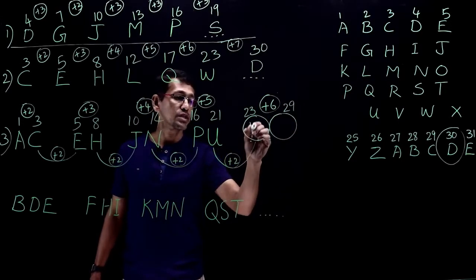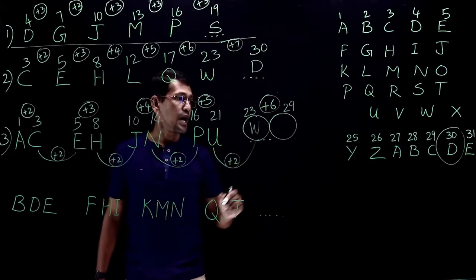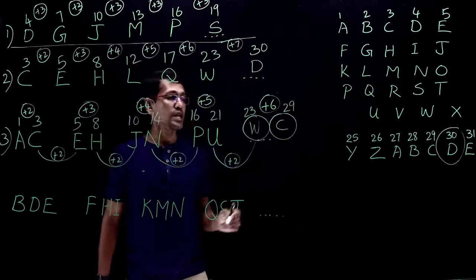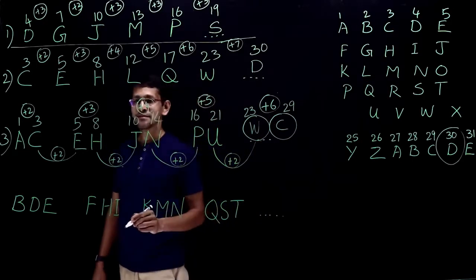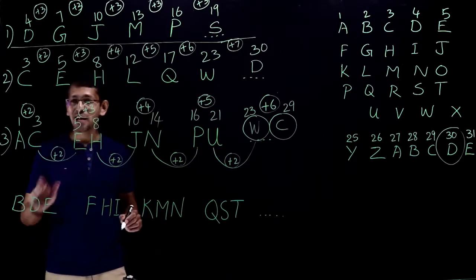So 23 is W, and 29 is C. So the answer must be WC.